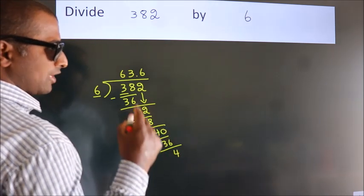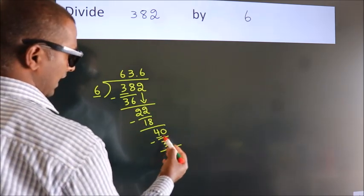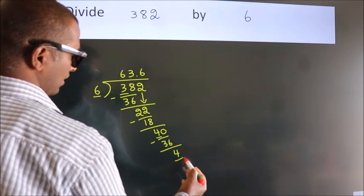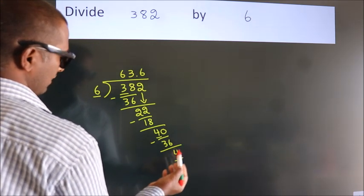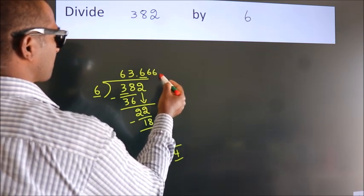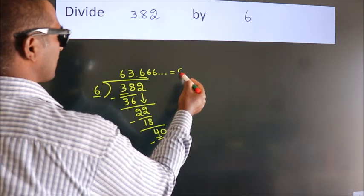Now you observe: we had 4 here and we got 4 again. That means this number keeps on repeating. So this is our quotient.